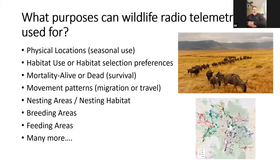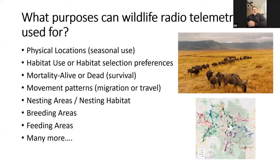Wildlife radio telemetry can be used for many purposes. You can determine the physical location of an animal — where is it in summer versus winter? You can determine what habitats animals are using, whether they're selecting one area over another, then go into those areas and look at vegetation to understand why. Transmitters can also be programmed to detect mortality — whether the animal is dead or alive.